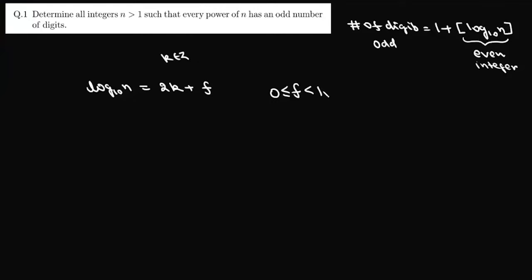Now we want every power of n to have an odd number of digits. So if we take any power of n, say n to the power r, we can write this as log 10^r, and it will be 2kr plus rf. The number of digits in n^r will be 1 plus the greatest integer function of log n^r base 10. Now again it should be an odd number; it will be odd if this is even.